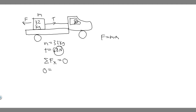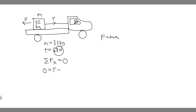Setting up the force equation: tension is positive (going right) and the other force is negative (going left), so we get zero equals T minus F. Rearranging, T equals F. Since force equals mass times acceleration, we get T equals m times a — tension equals the mass of the crate multiplied by the acceleration.